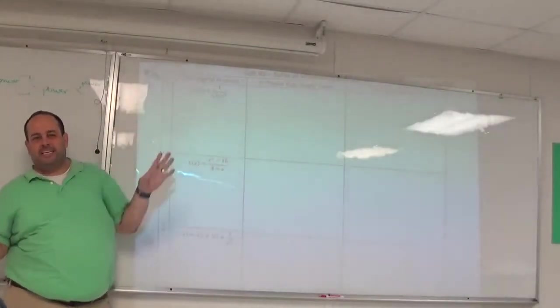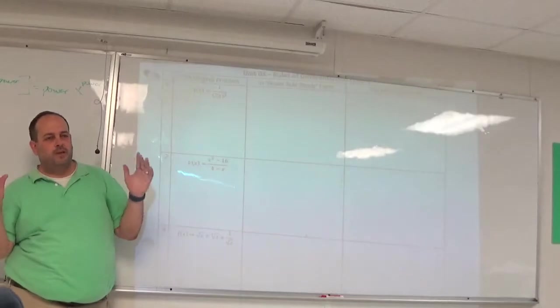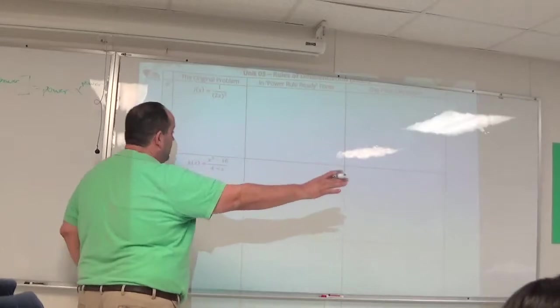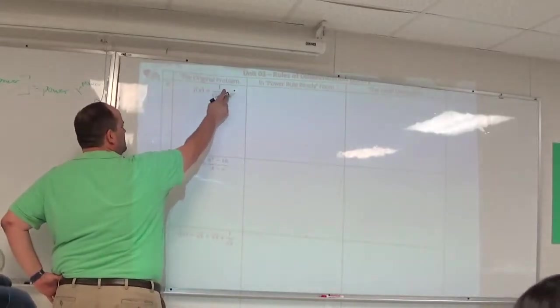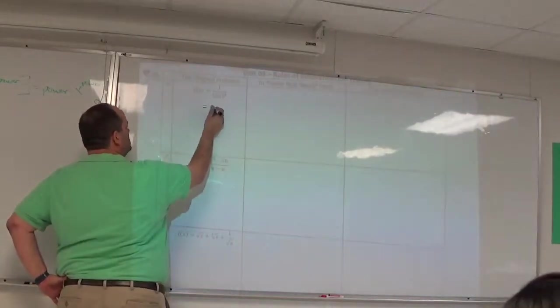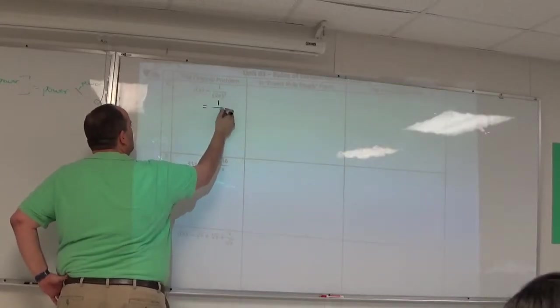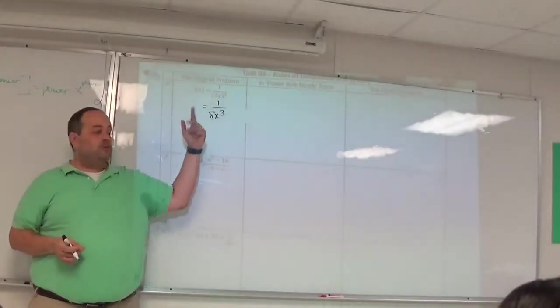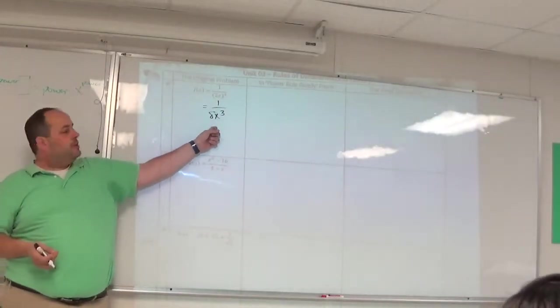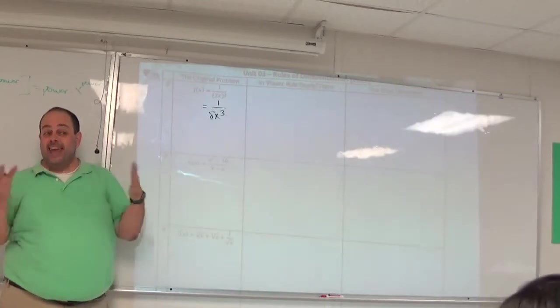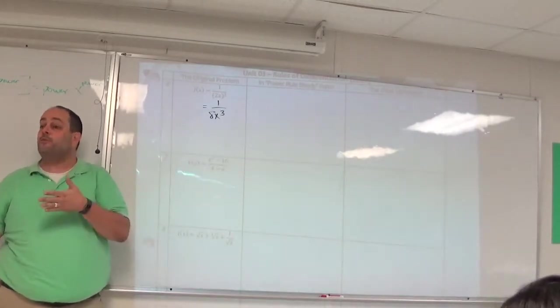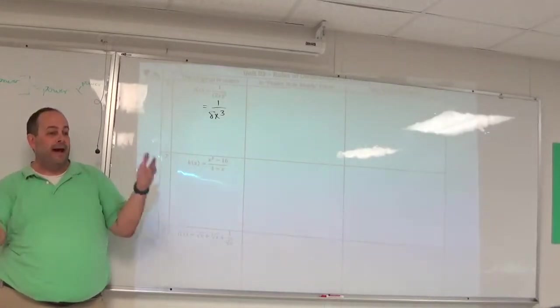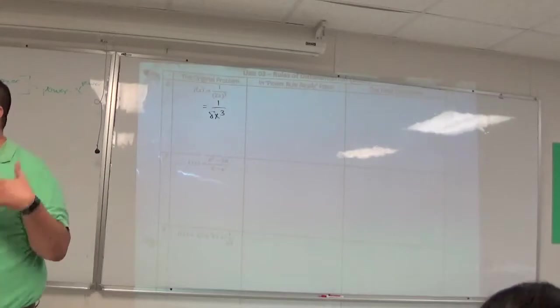So the issue with number six has to do with what's being raised to the third power. The whole thing is raised to the third power. So 2x is being cubed. 2x times 2x times 2x. Everybody knows what that is. That is 8x³. Thank you, Sylvia. You have 1 over 8x³. That is not power rule ready. You're only power rule ready when you have x raised to a power and it's not involved in a division or a multiplication.